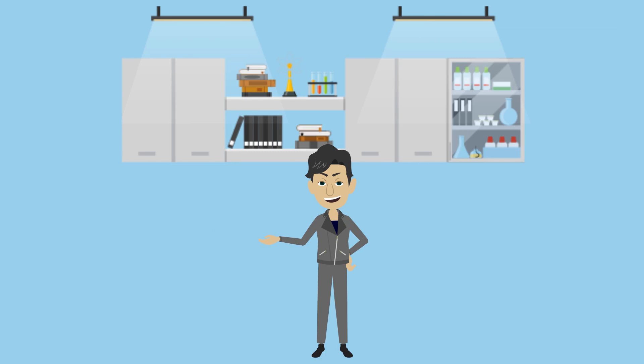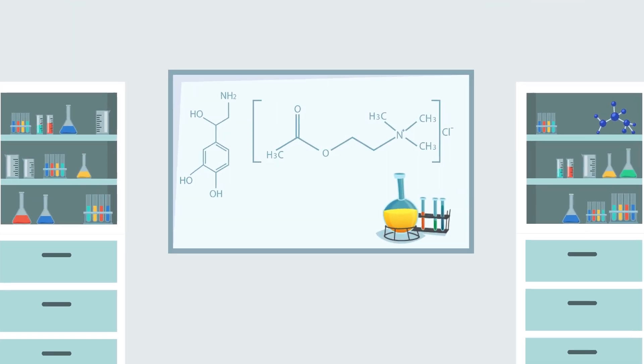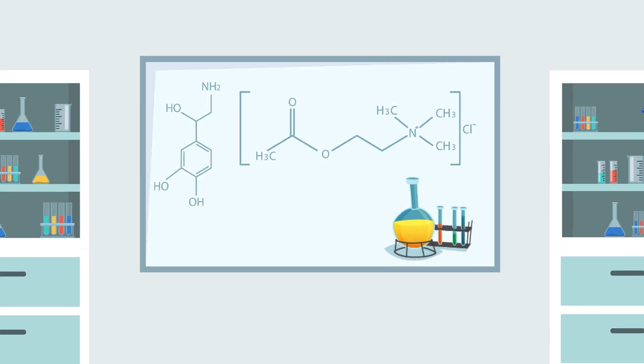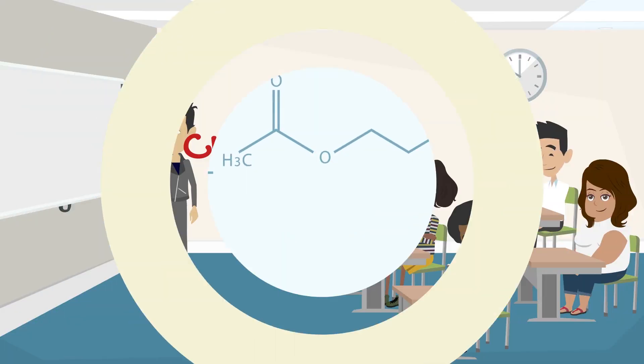Avogadro received the first chair of mathematical physics in 1820 at the University of Turin. He furthered his scientific research and in 1821, he came up with the correct molecular formula for ether and alcohol. In 1822, Avogadro lost his job at the University of Turin. The university was closed down due to civil disturbances.